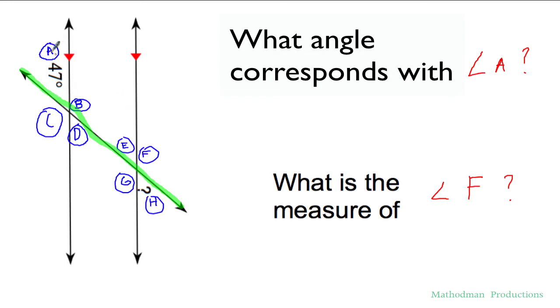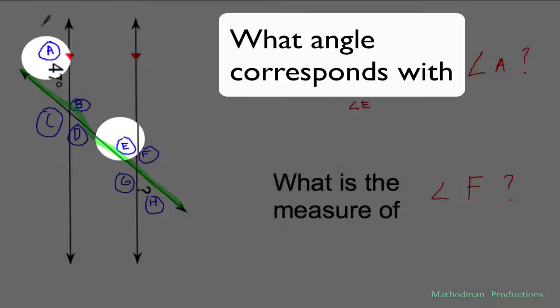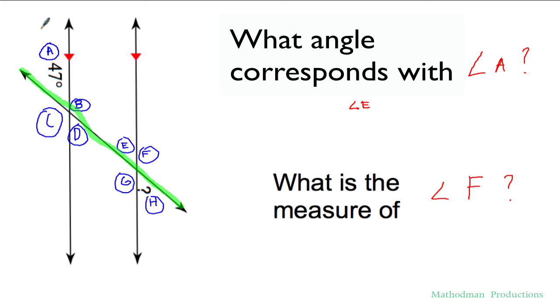Angle A is on the top left of these first set of angles. So the one that matches up with that, the one that corresponds with angle A in the second part is angle E. Now we get the question what is the measure of angle F? Trying to find this one out.